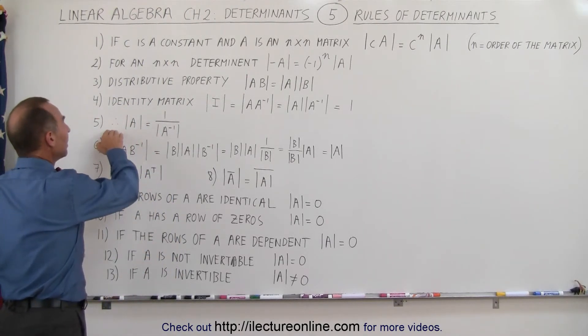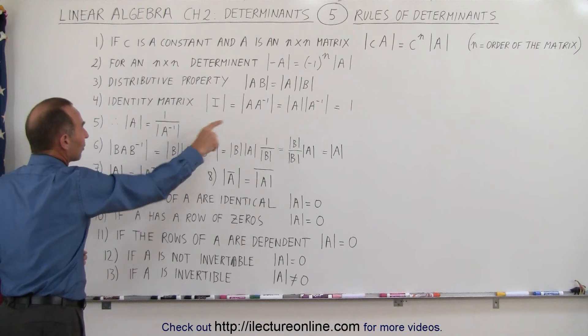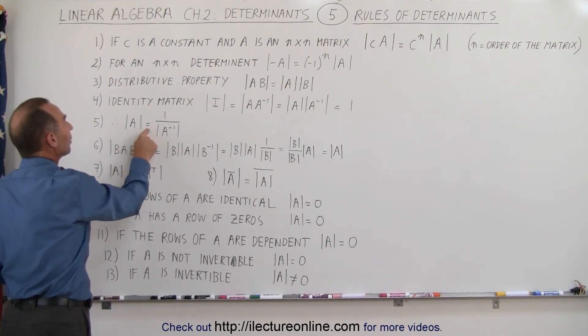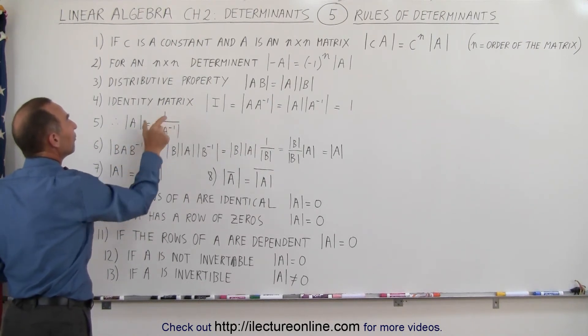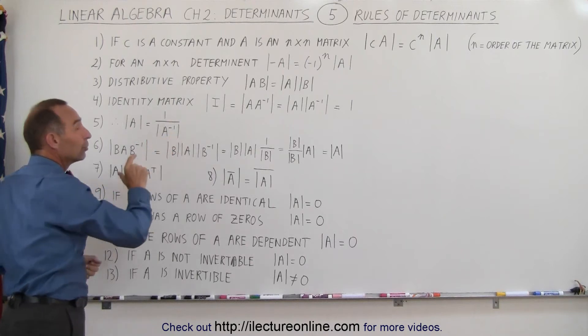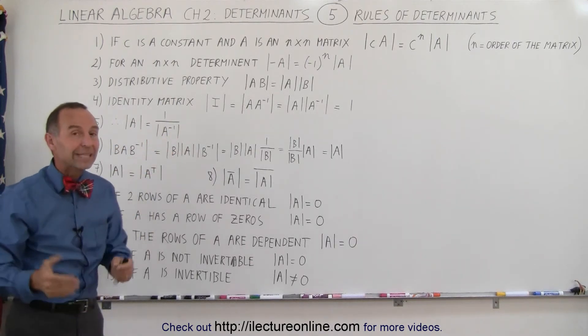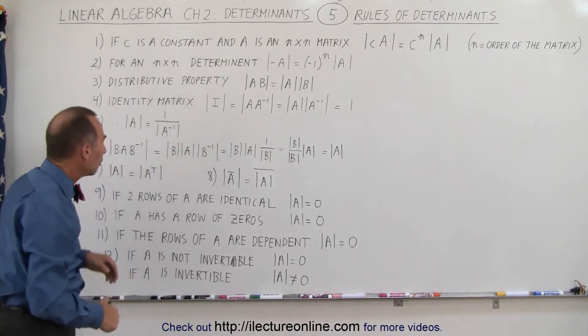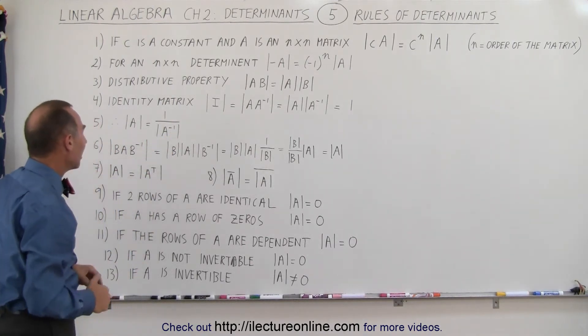Consequently, we can write that the determinant of matrix A is equal to 1 divided by the determinant of the inverse of matrix A, and we'll call that rule five.